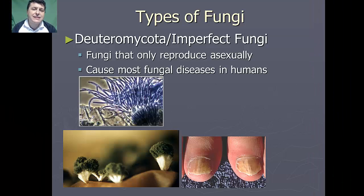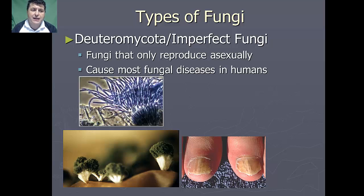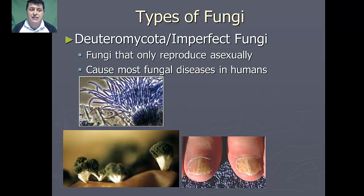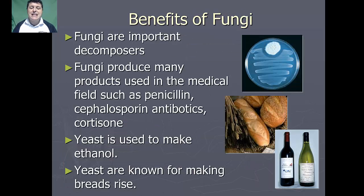Our last type of fungus is the deuteromycota, or the imperfect fungi. These are fungi that only reproduce asexually. One of the reasons that they are of consequence is that these are the types of fungi that cause the most fungal diseases in humans, including things like toenail fungus.